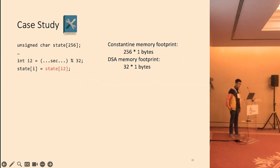Now, let's look at a case study on the mitigation. In this program, the variable i2 is indexed into an array. i2 is sensitive, but it can only take on 32 unique values because of the modular operation on the previous line. Therefore, DSA only needs to touch the first 32 elements, whereas Constantine needs to touch every element in the array.